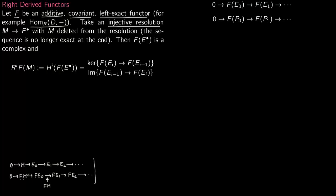Now you delete the M term from the resolution. You just delete it — you don't do anything else with the maps. So you get a complex. This is no longer exact, because exactness was preserved at just the first two terms by a left exact functor. So exactness is not preserved, although this still remains a complex — meaning the image still lies in the kernel. And since this is a complex, you can talk about its cohomology groups, since the index is increasing from 0 to 1 to 2 to 3 and so on.